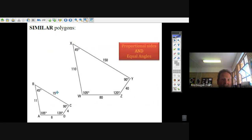150 to 15 is the same as 110 to 11, which is the same as 80 to 8, and the same as 40 to 4. So because their sides are proportional and their angles match up, are equal, we say they are similar polygons.